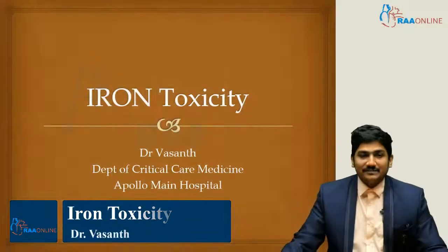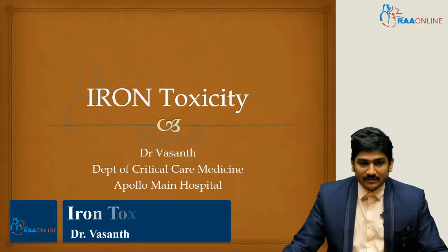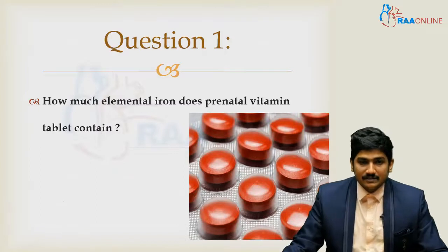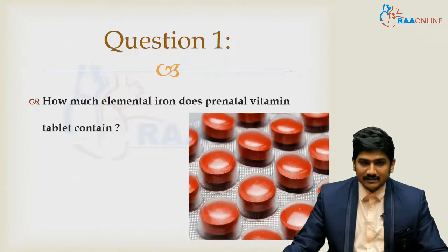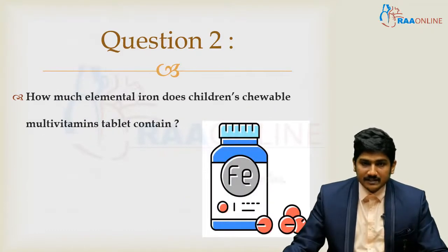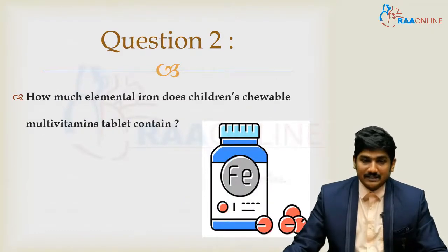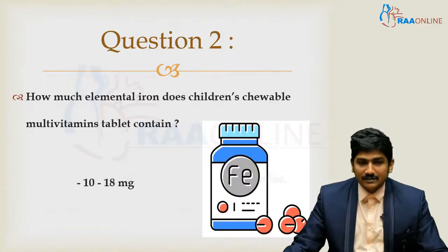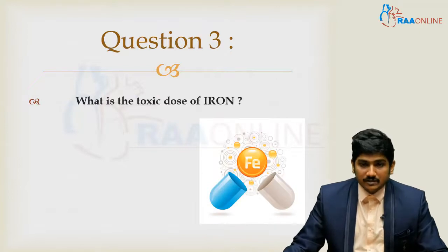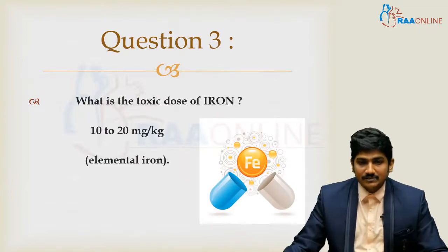Welcome to the RAW online program. Today we'll cover iron toxicity. The first question: how much elemental iron does a prenatal vitamin tablet contain? It is around 65 mg. A children's chewable multivitamin tablet contains around 10 to 18 mg. The toxic dose of iron is 10 to 20 mg per kg of elemental iron.